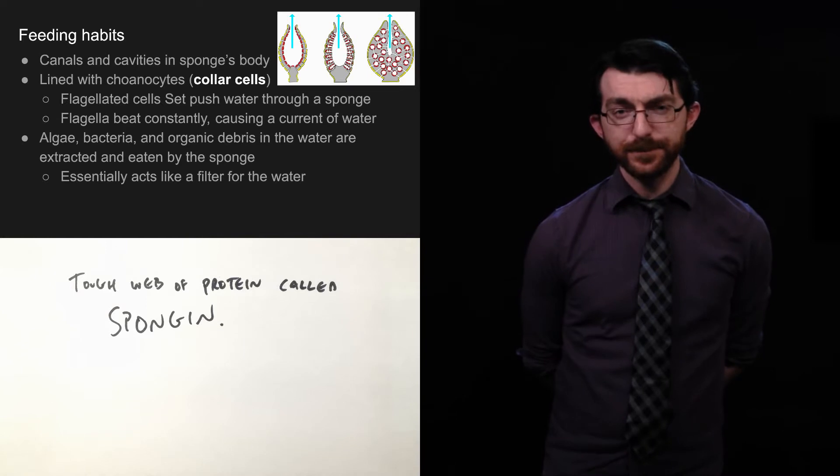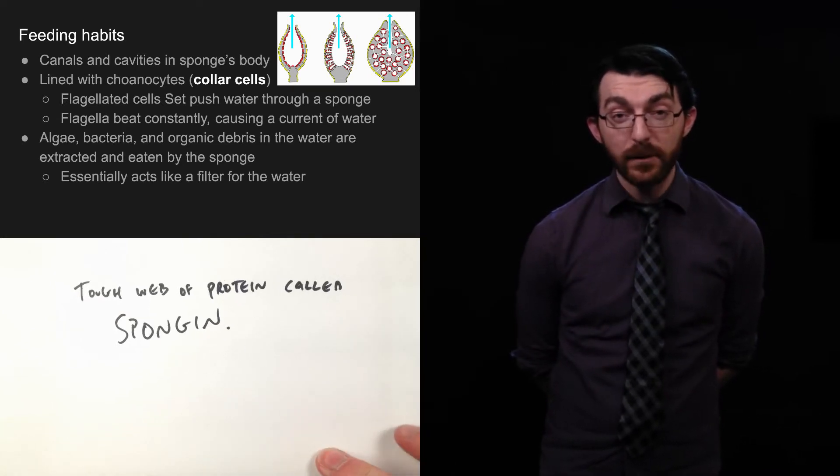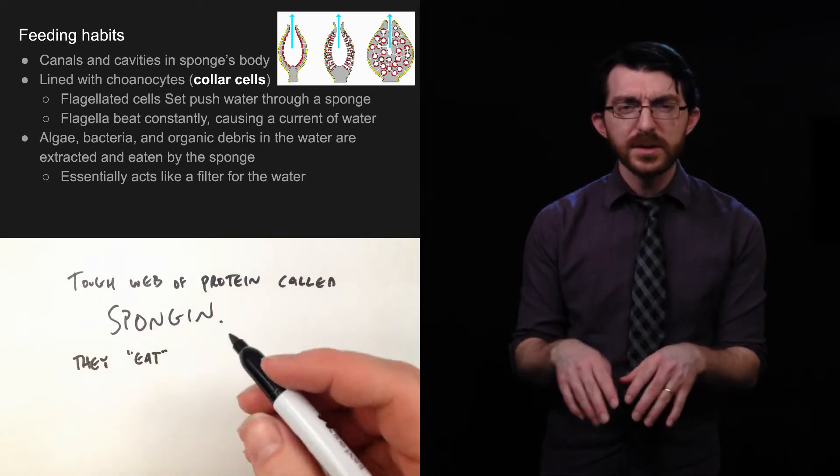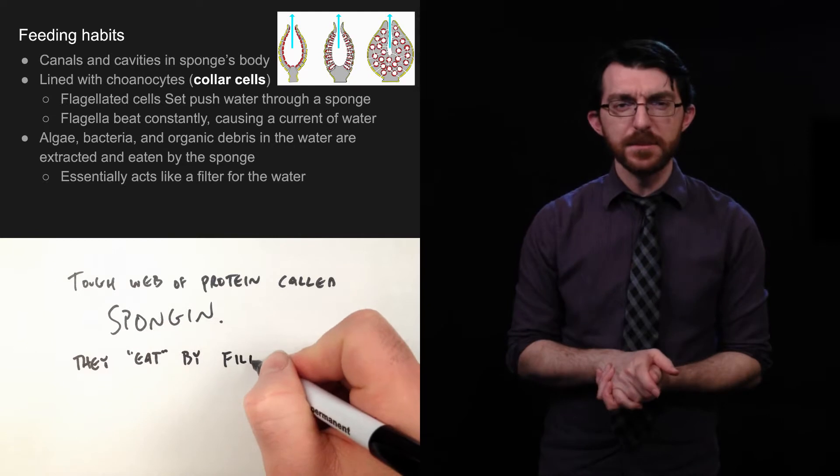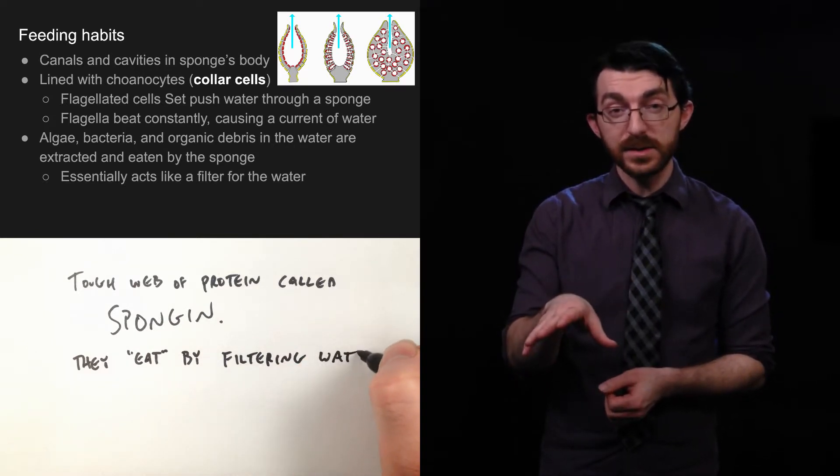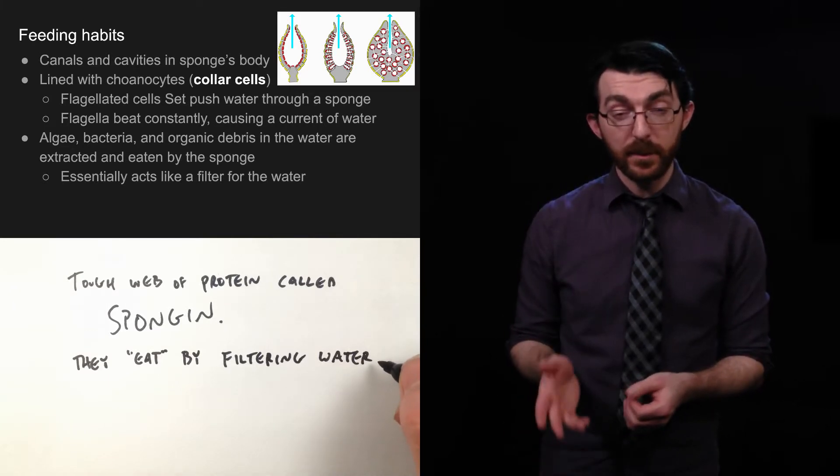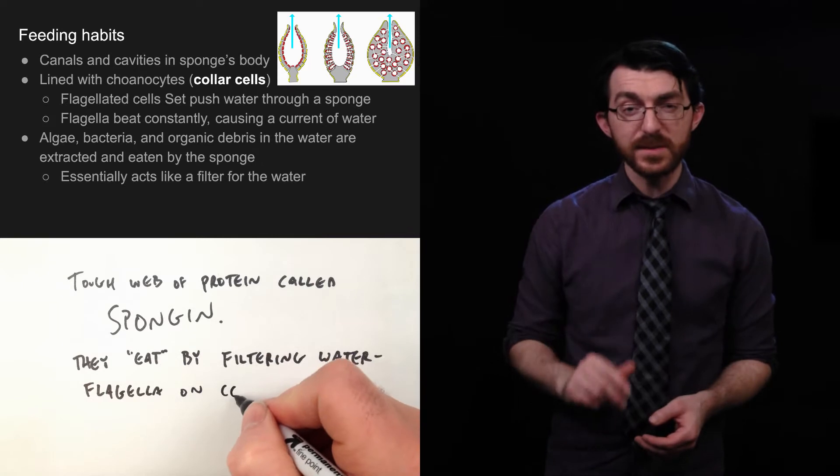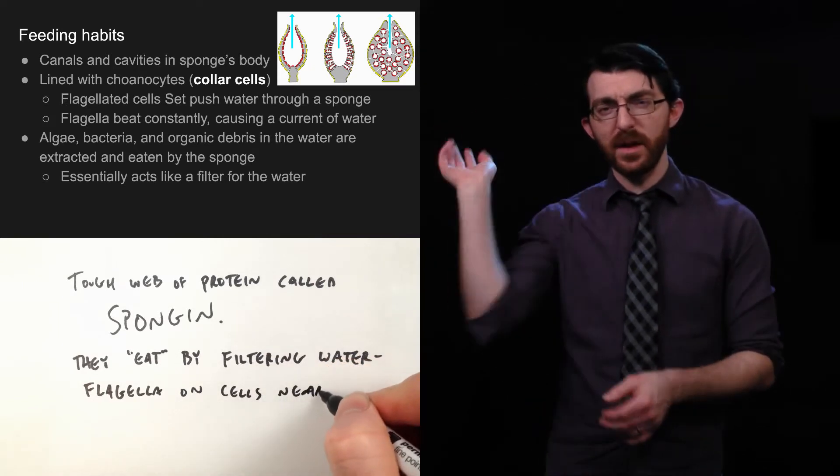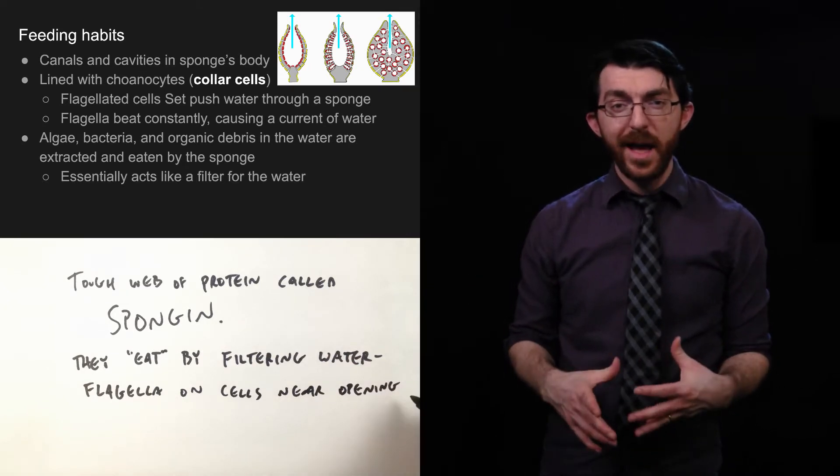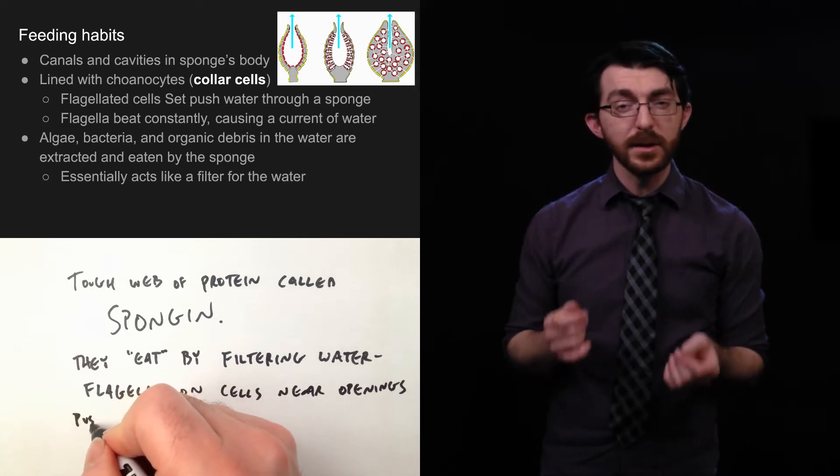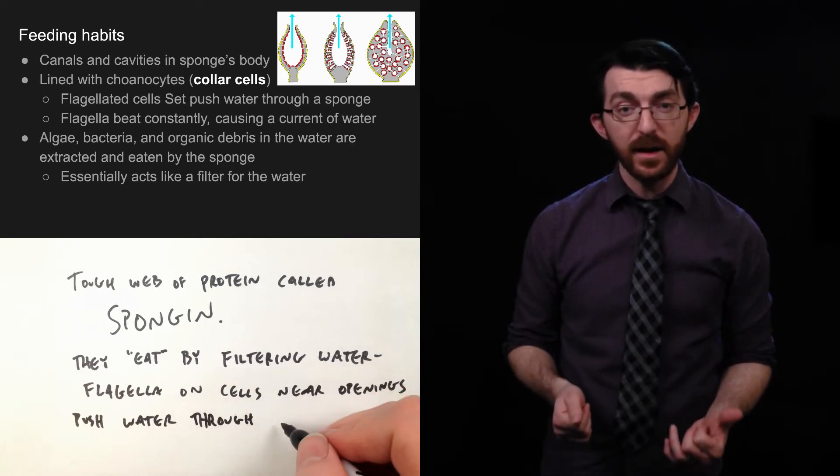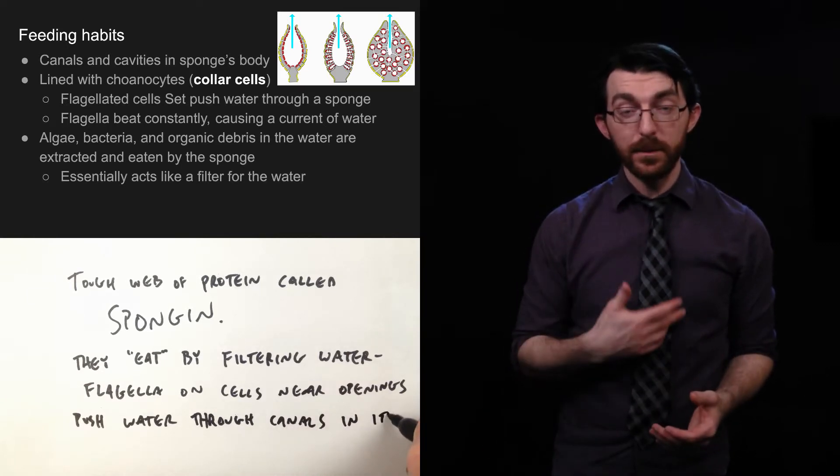So, how do sponges eat? They don't have like a mouth. They have canals and cavities all throughout its body. I mean, if you've ever seen a sponge, it's full of little holes. So, there's a whole bunch of paths through the sponge's body. These are lined with collar cells that are called choanocytes. And, these all have flagella. Remember flagella from bacteria and from protease? That's like that whip-like tail structure that some cells have. And, they push water through a sponge. You can almost think of it like they're paddling. Like, they're sweeping water through the sponge. And, they're beating constantly. Which causes a constant stream, current of water through the sponge's body. So, things that are getting caught up in this current, like algae, bacteria, organic debris in the water, they're extracted, absorbed, and then digested by the sponge.